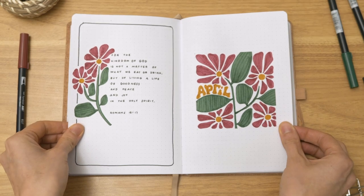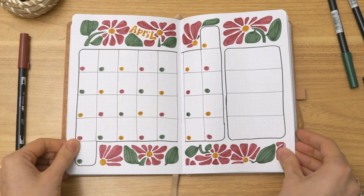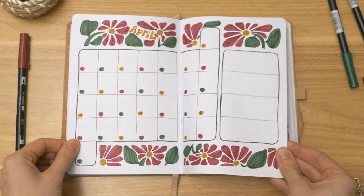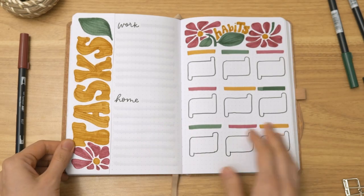Now let's do a flip through here. So we've got our title page with the Bible verse, a calendar, and then our tasks and habit tracker for the month.